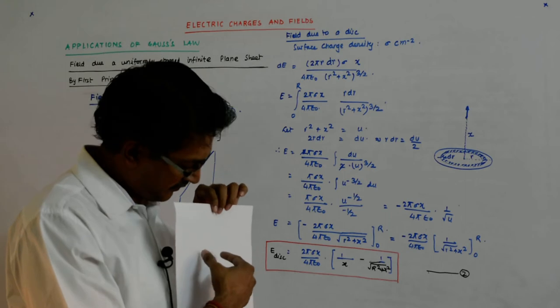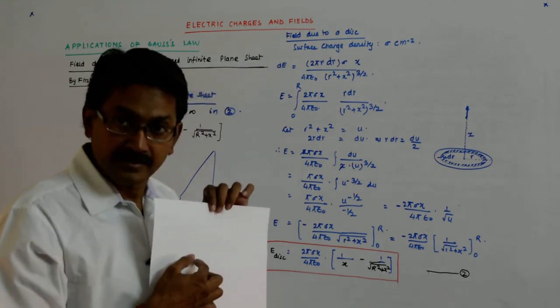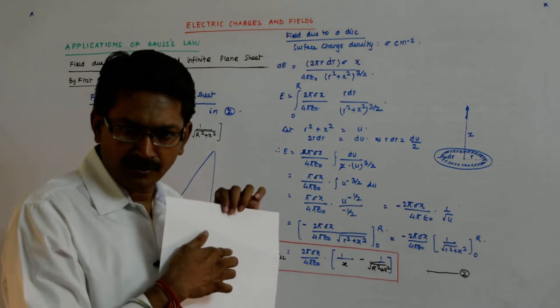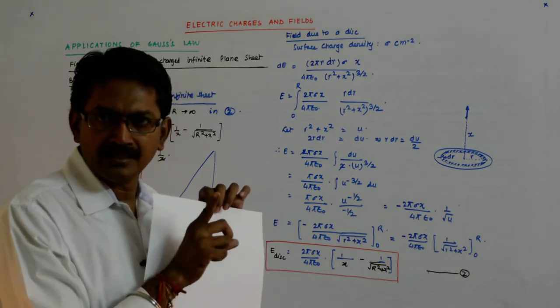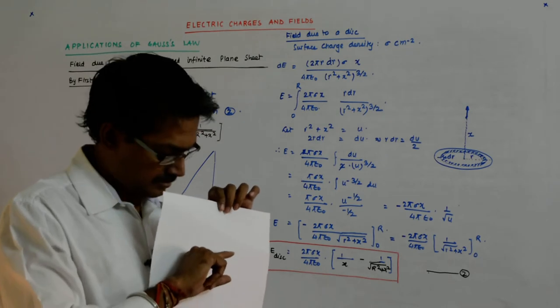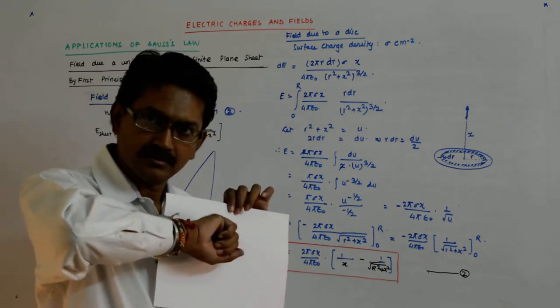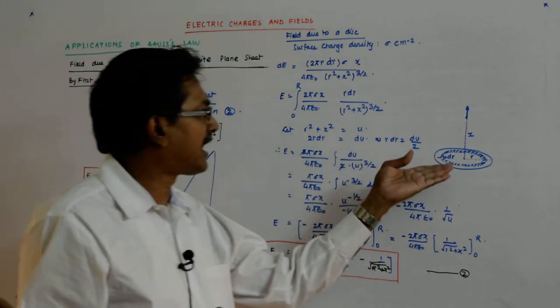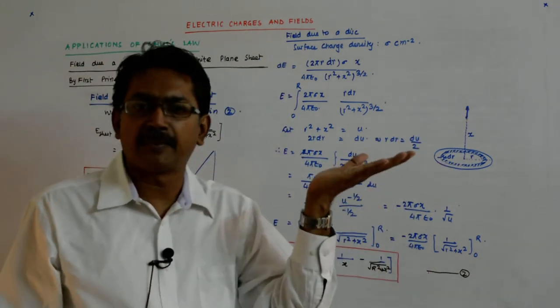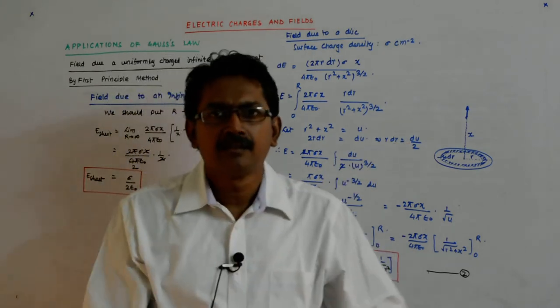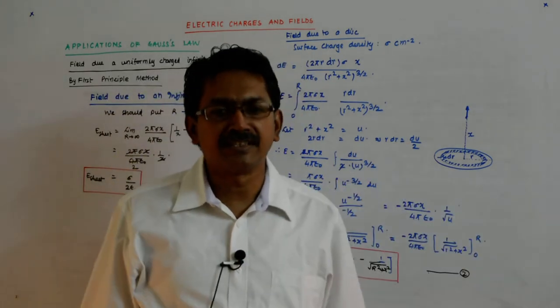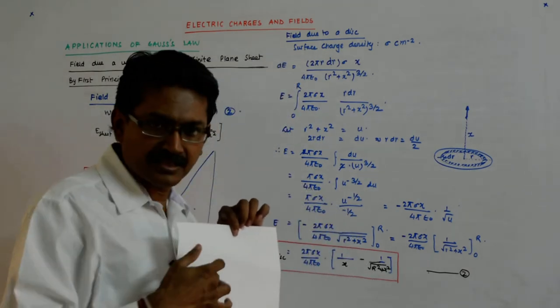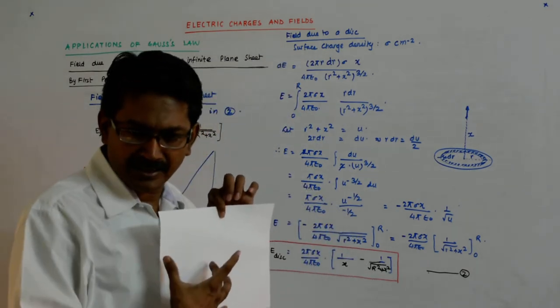The field is perpendicular to the plane. Why? Because for a ring it is perpendicular to the plane, for the disc it is perpendicular to the plane, and if I extend the disc to infinity then also it's perpendicular to the plane. So what happens is it starts contributing even when I go a very small distance away.